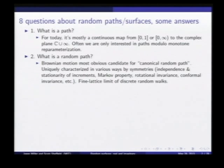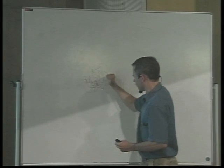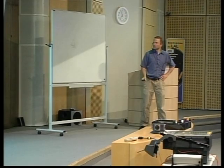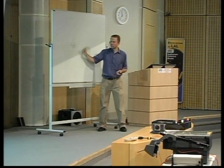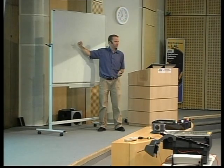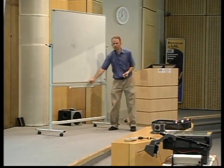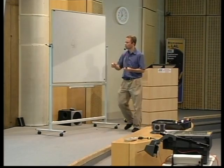I'll draw you one here. Here's a Brownian motion in the plane. If you pay close attention, you'll notice that my increments were stationary, there was a Markov property — condition on what I had done to some point, what happened after that was independent. There was rotational invariance and also conformal invariance, which may have been harder to get from one sample.